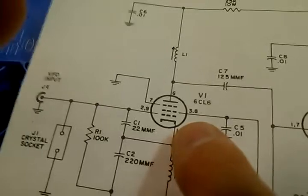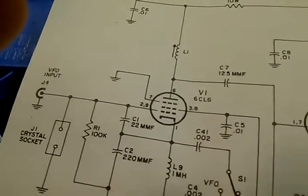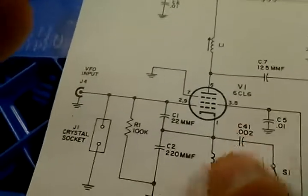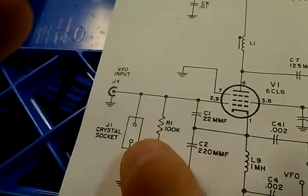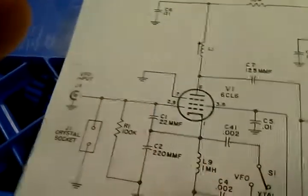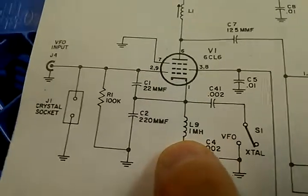According to the spec sheet they're pretty close, but this was a tube they use in television sets. It says it's good for at least three megahertz. Anyhow, this is where the crystal goes. You can run a crystal or external variable frequency oscillator in here, you just turn the switch.